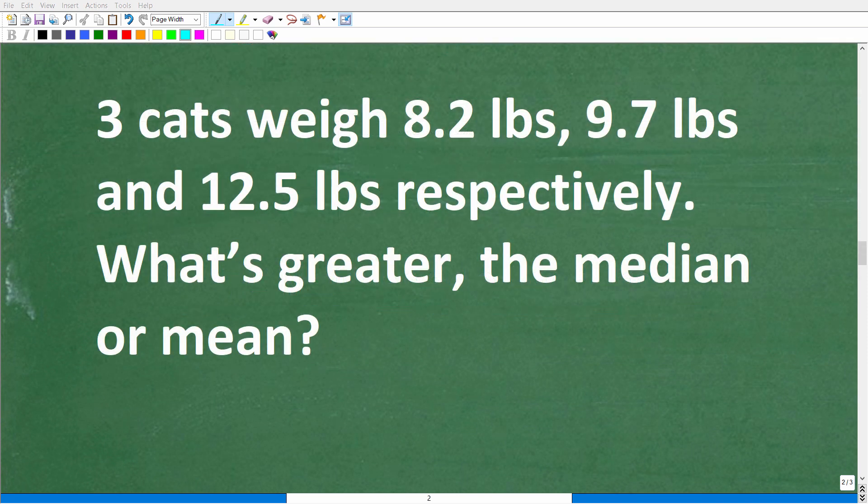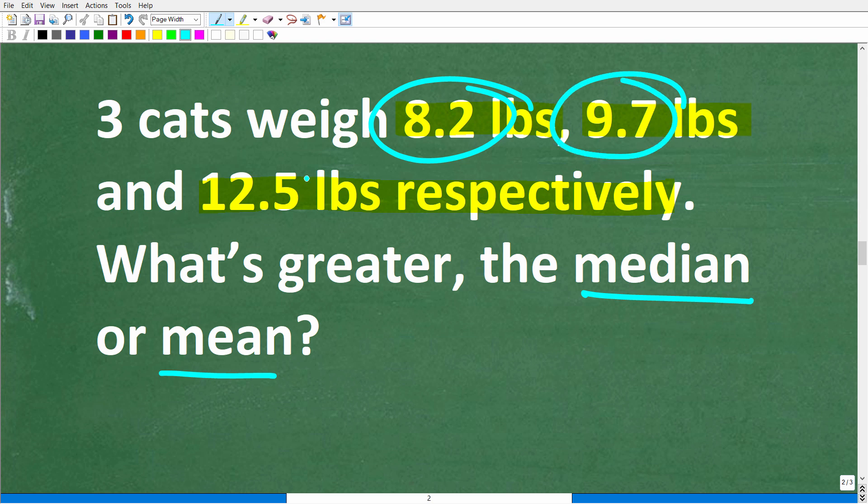Okay, so now that we know how to calculate the mean and the median given a set of data, well, we can solve the problem. All right, so we have three cats that weigh 8.2 pounds, 9.7 pounds, and 12.5 pounds, respectively. So our data set here is 8.2, 9.7, and 12.5. So what we need to do is to actually calculate the median and the mean to determine which one is greater.